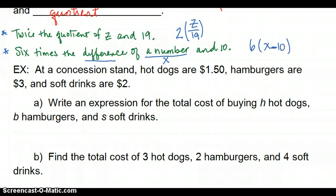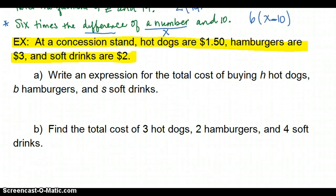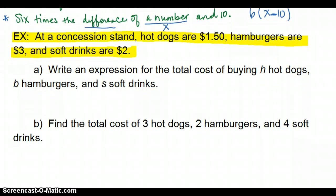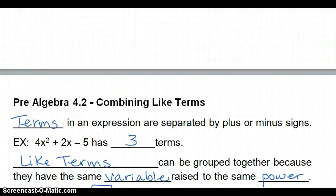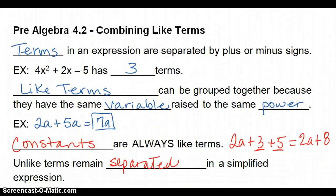I'm going to leave this example problem. This is a real-life example problem about going to a concession stand and looking at the cost of the items. And first, I want you just to write an expression using H for hot dog, B for hamburger, and S for soft drinks. Then, I'm going to tell you how many of each I want you to buy. So, I want you to see how algebra is used in everyday life. Give me your best effort. Try this problem. We'll talk about it in class tomorrow.